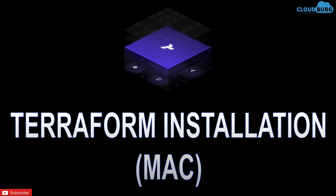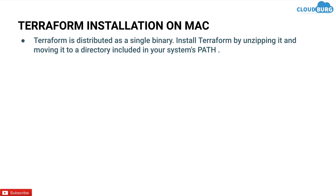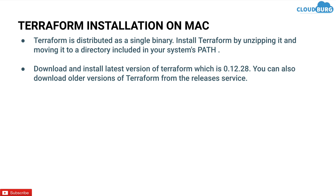Now let's see how to set up Terraform on a local machine. I have a Mac operating system so I'll share the steps required for Mac, but if you have Windows or a Linux-based OS the process will be the same — if you run into any issue please contact me. Terraform is distributed as a single binary; you can install Terraform by unzipping it and moving it to a directory included in your system's path. You can download and install the latest version, which is 0.12.28.